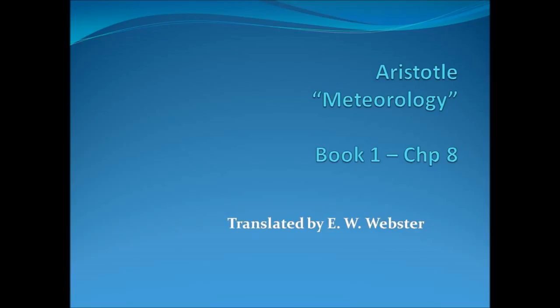We must suppose that what happens is the same as in the case of the comets, when the matter does not form independently, but is formed by one of the fixed stars or the planets. Then these stars appear to be fringed, because matter of this kind follows their course. In the same way, a certain kind of matter follows the Sun, and we explain the halo as a reflection from it when the air is of the right constitution.